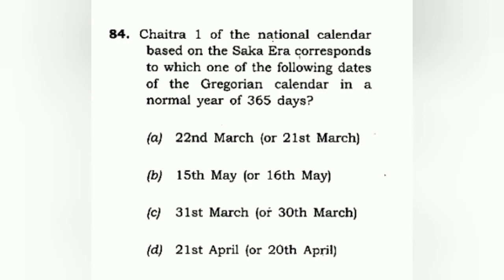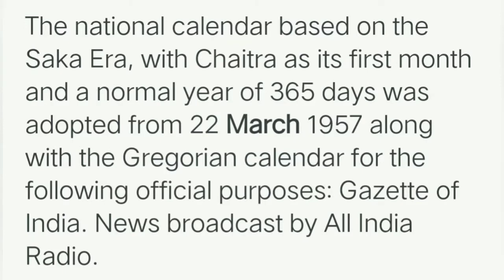Chaitra 1 of the national calendar based on the Saka Era corresponds to which date of the Gregorian calendar in a normal year of 365 days? The correct answer is A: 22nd March, or 21st March in some years. Make sure you know about the Saka Era, Chaitra 1, and its Gregorian calendar correspondence. You can Google it or refer to a book. The national calendar was adopted in 1957.